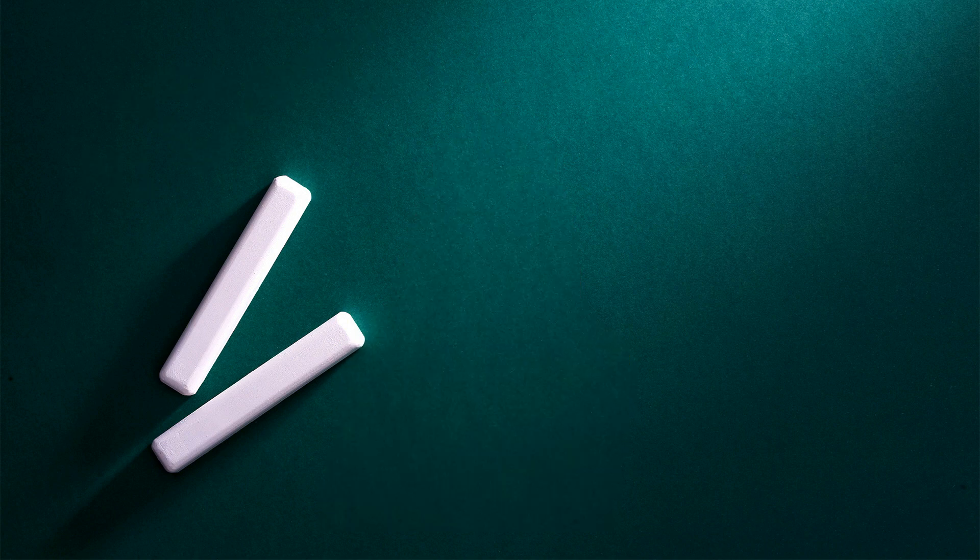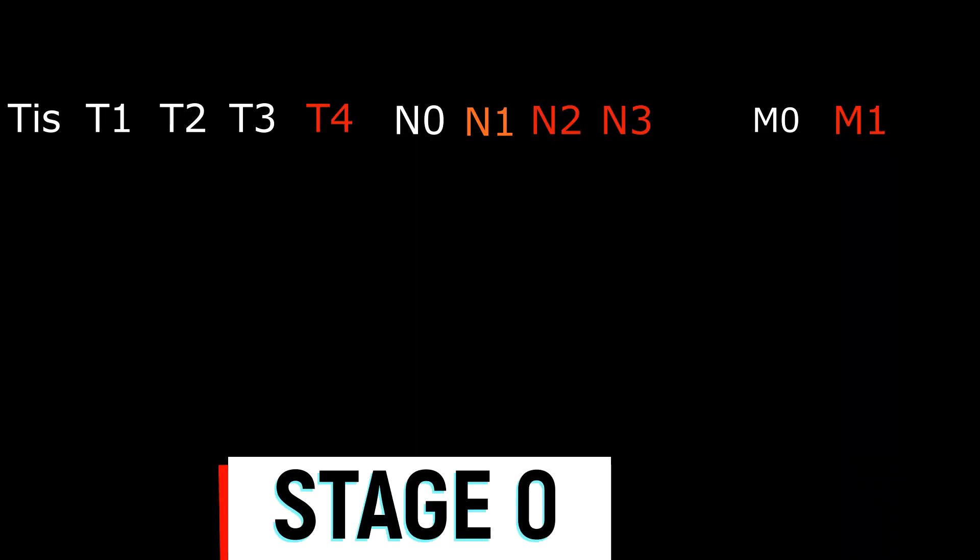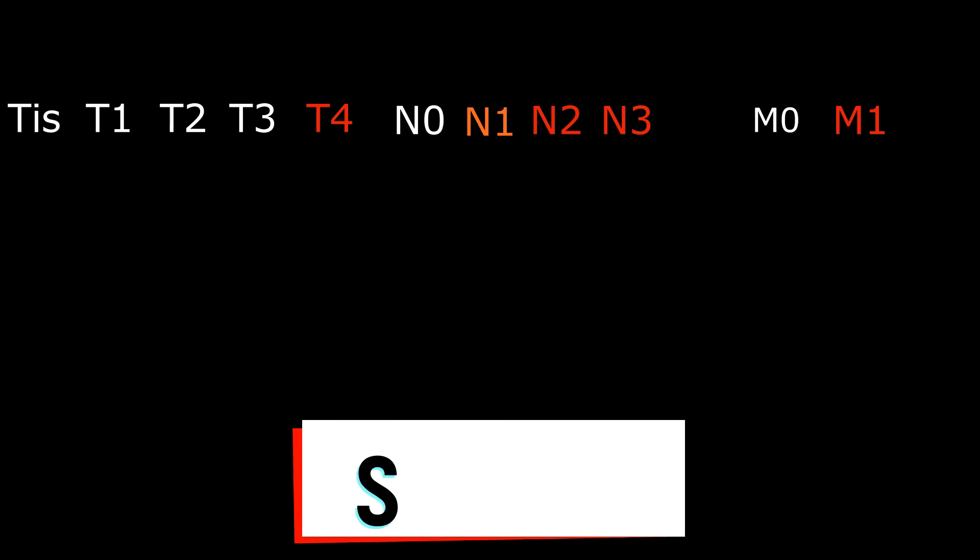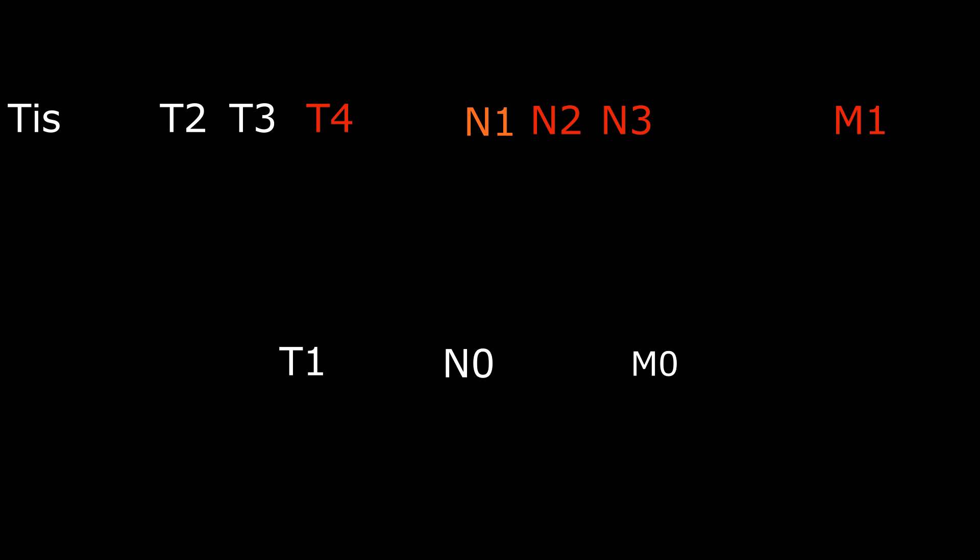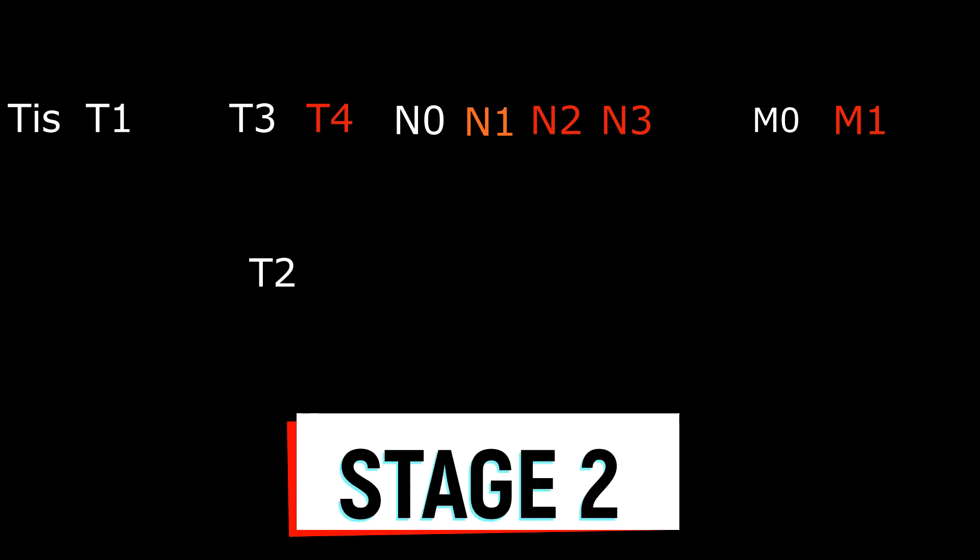After having all the T, N, and M findings, we must stage this tumor. Stage 0 is when you have TIS, that is carcinoma in situ, with N0, that is no lymph neural metastasis, and M0, that is no distant metastasis. Stage 1 meaning that the size of the tumor is less than or equal to 2 centimeters, that is T1, with no kind of metastasis, that is N0 and M0. Similarly, T2 N0 and M0 is stage 2.